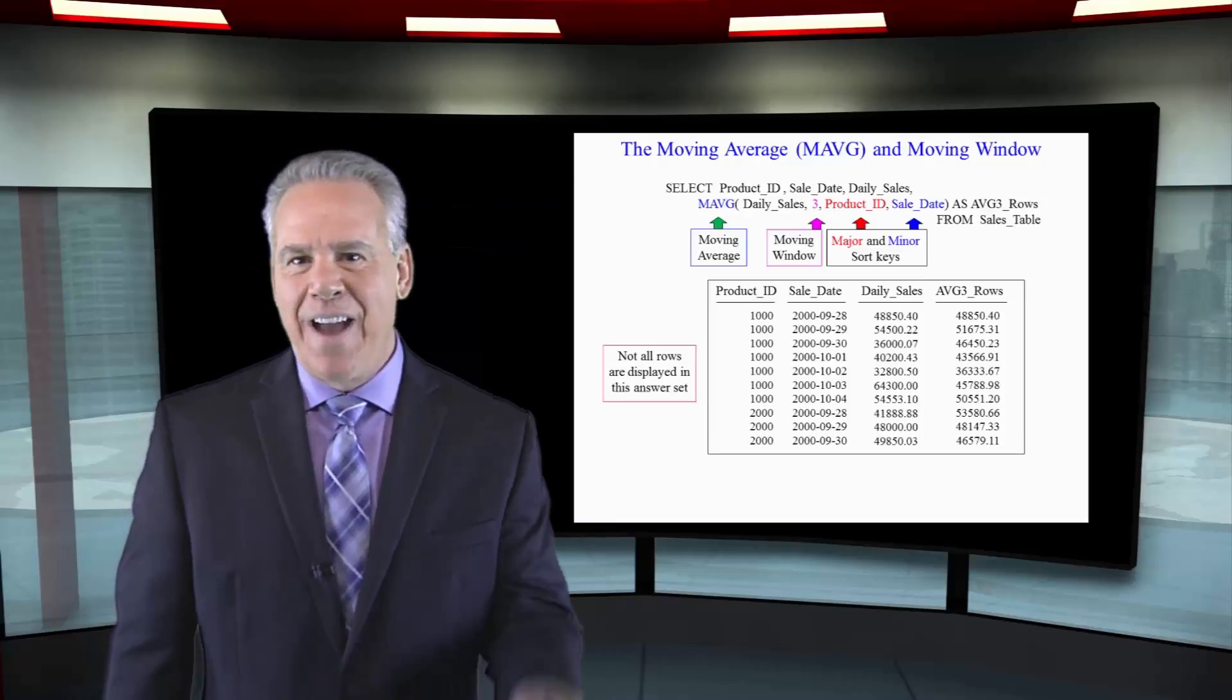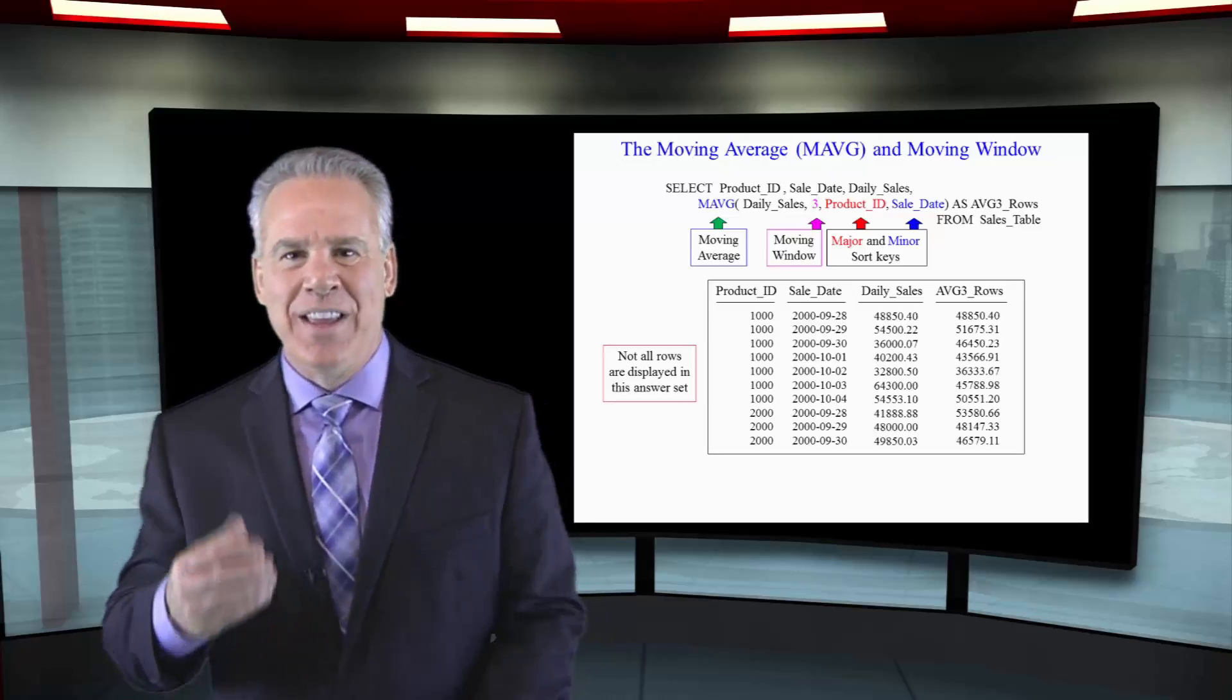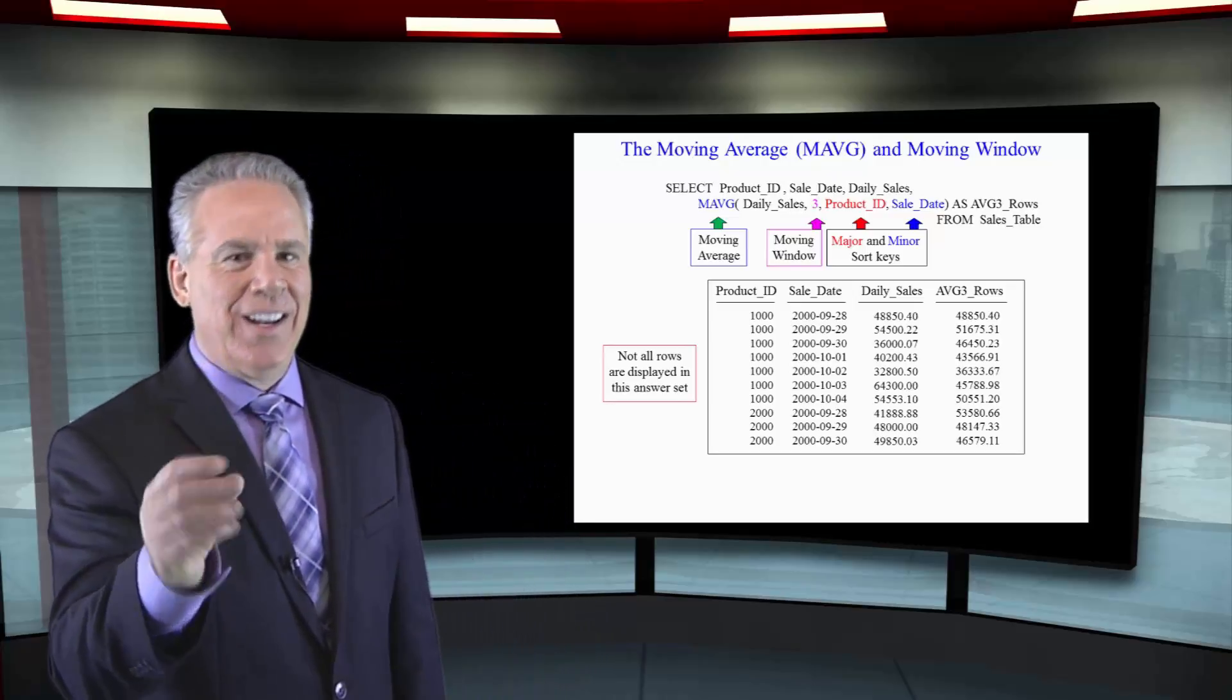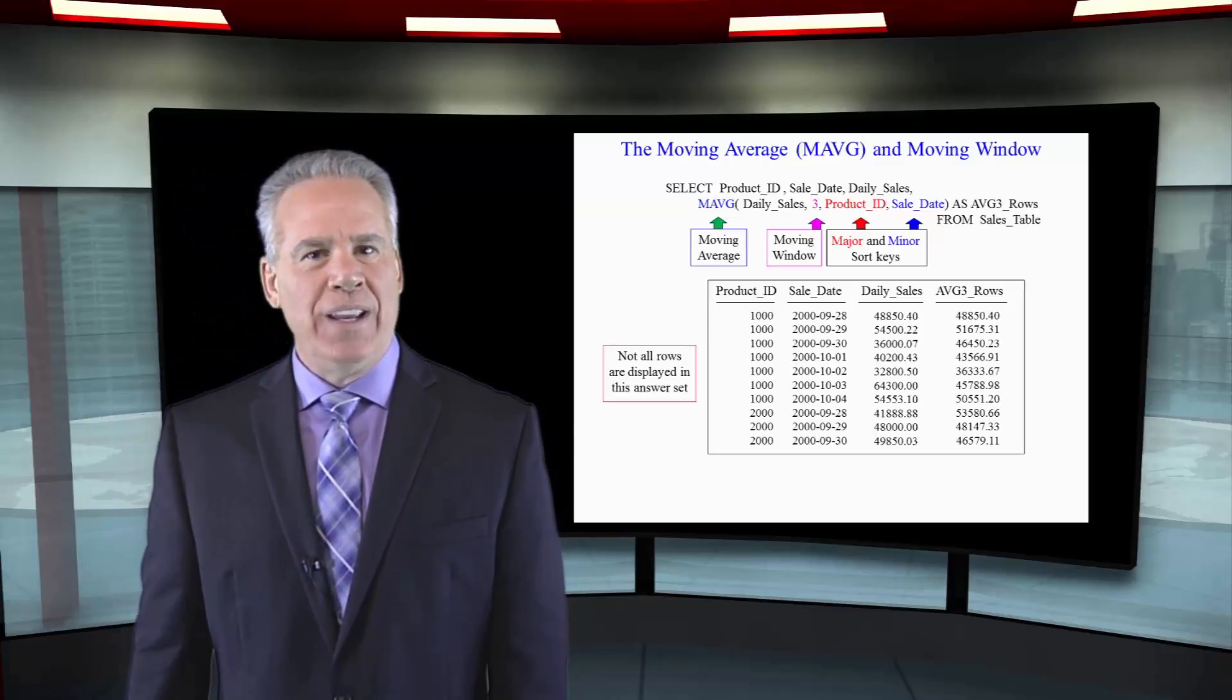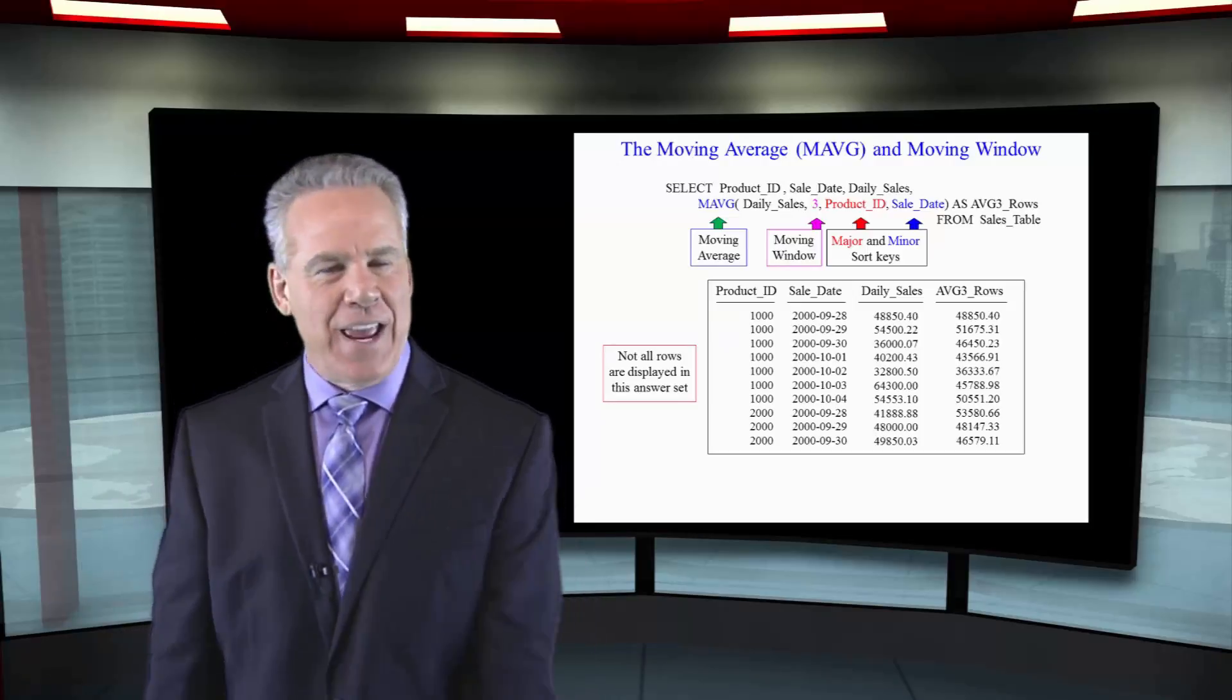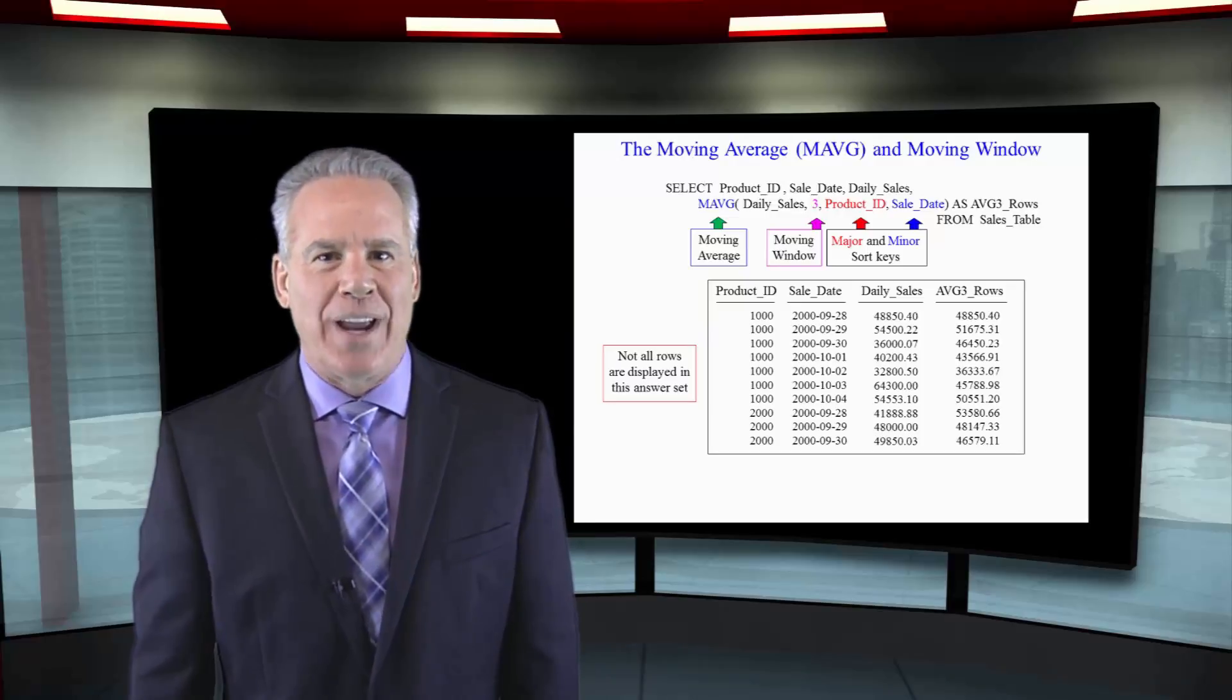Are you seeing a pattern yet? I've been showing you the ordered analytic in Teradata form and then I move into the ANSI version, and that's what we're doing now because we've got a new one for you: the moving average. You've heard of the Dow 65 day moving average. You're going to understand exactly what that means right now.